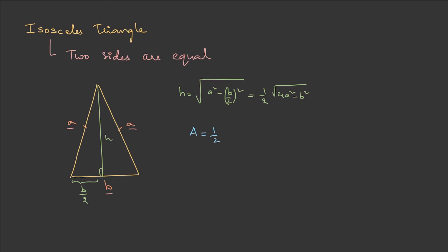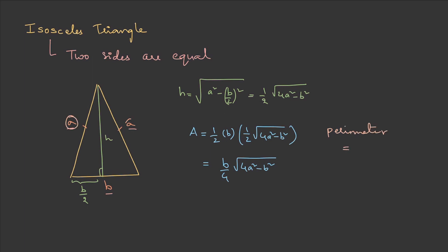So the area of the isosceles triangle is (b/4)√(4a² − b²). The perimeter is the sum of all sides: a + a + b = 2a + b.